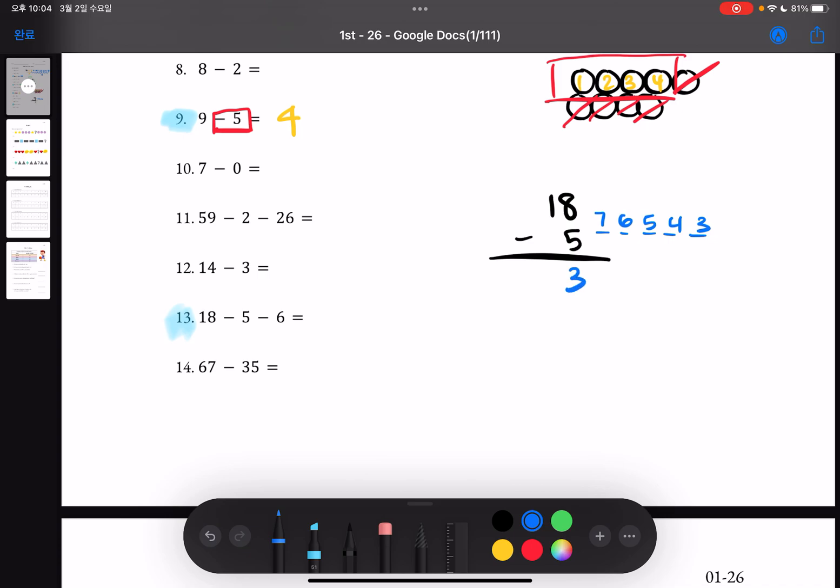So you'll write 3 below 8 and 5, and because there is no tens place you will just bring down the 1 and get 13 as the answer. And from 13 you will have to do 13 minus 6 and I'll show it with a circle.